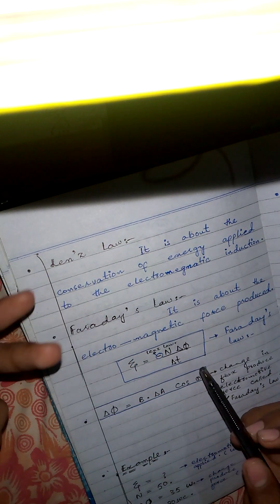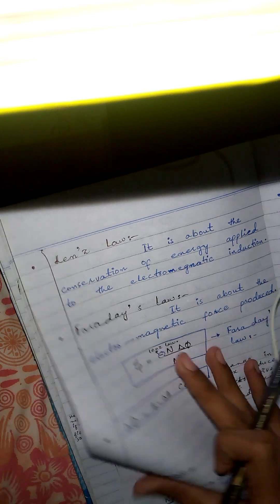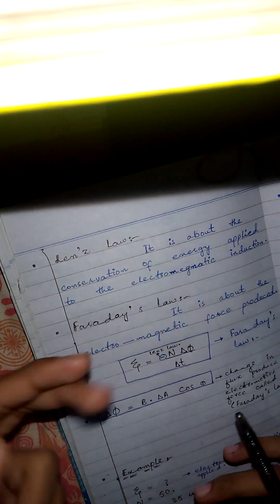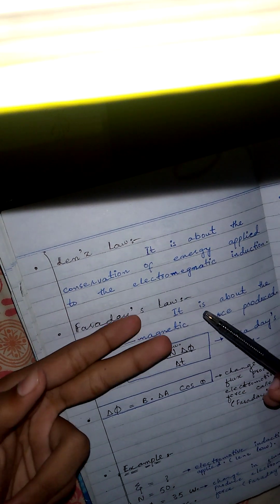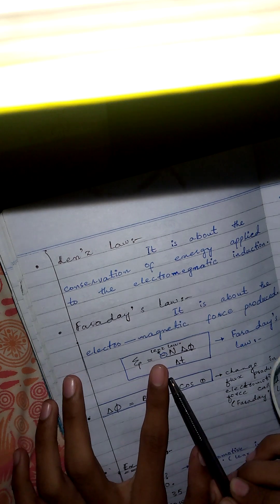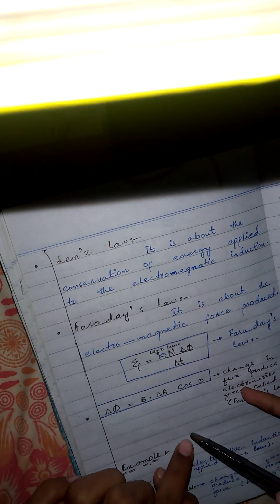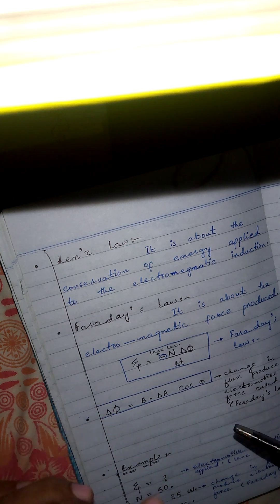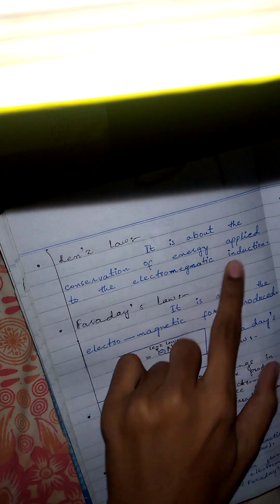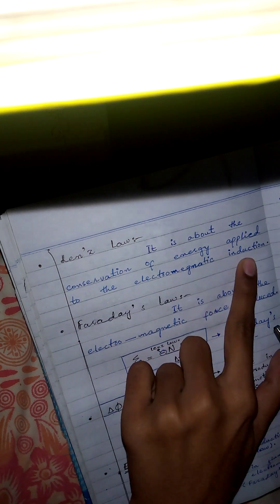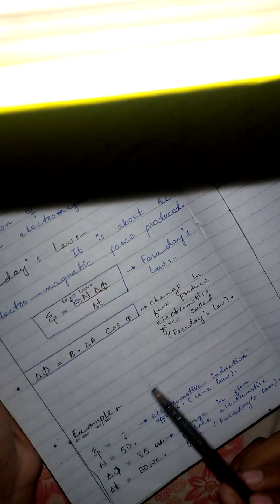The minus sign represents Lenz's law. It means the electromagnetic induction is opposite to the induced current. If we produce an induced current, the minus sign for the electromagnetic induction tells us how much opposite the electromagnetic induction is applied relative to that induced current.